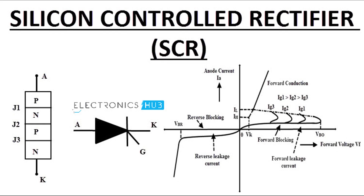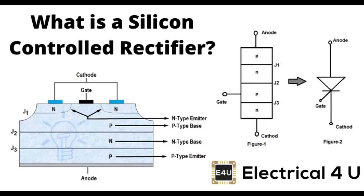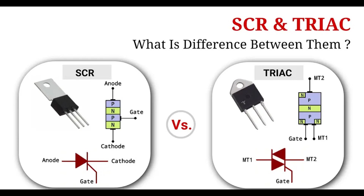Forward conducting mode — Condition: positive voltage is applied to the anode relative to the cathode, and a small positive gate current is applied to the gate terminal. Behavior: the gate current injects carriers into the P-type layer near the cathode, reducing the width of the depletion region at junction J2. This triggers the SCR into conduction. Once triggered, junction J2 becomes forward biased, allowing a large current to flow from the anode to the cathode. The SCR remains in the on state even if the gate current is removed, as long as the anode current is above the holding current level.